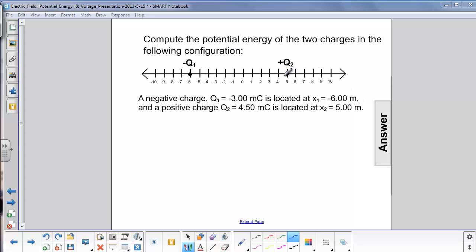So first, what's the distance between these two charges? Well, just counting off the boxes, we find that they're 11 meters apart. We could also have found that by doing 5 minus negative 6 and coming up with 11.